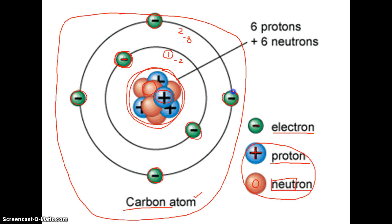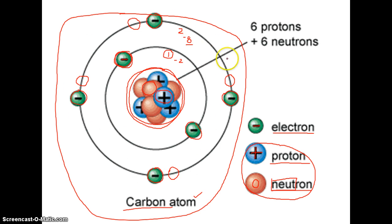If you count the electrons in this second circle — this second orbital outside the nucleus — I count one, two, then three, then four. So in a carbon atom there are only four of these eight electrons in the outermost, or what we call the valence, orbital. That means carbon is missing four electrons — it already has four but it wants to have eight.